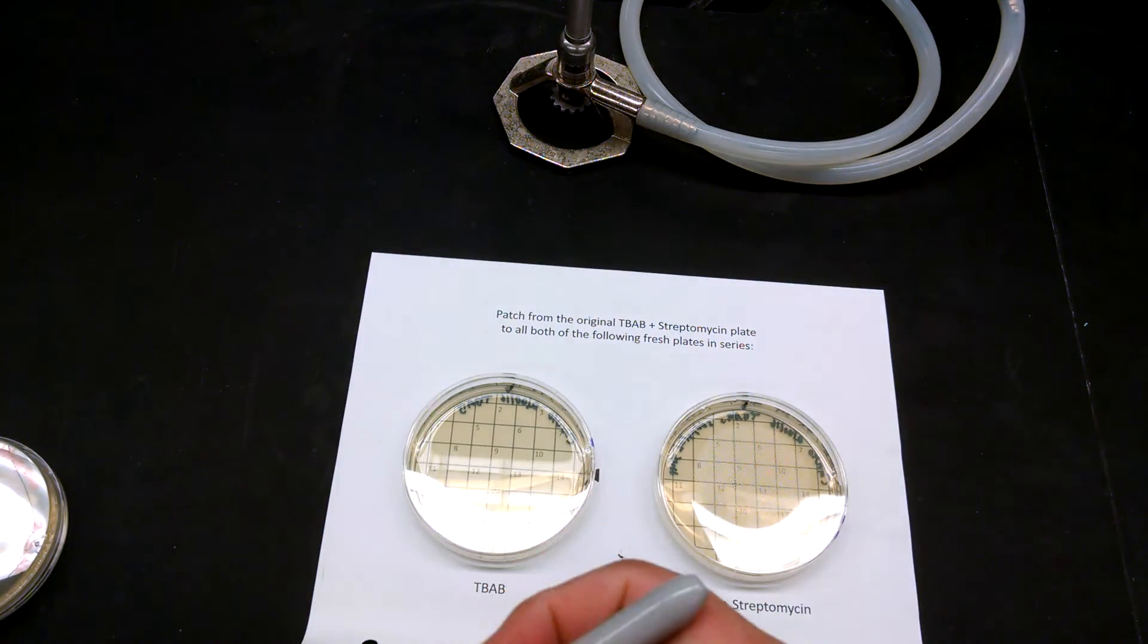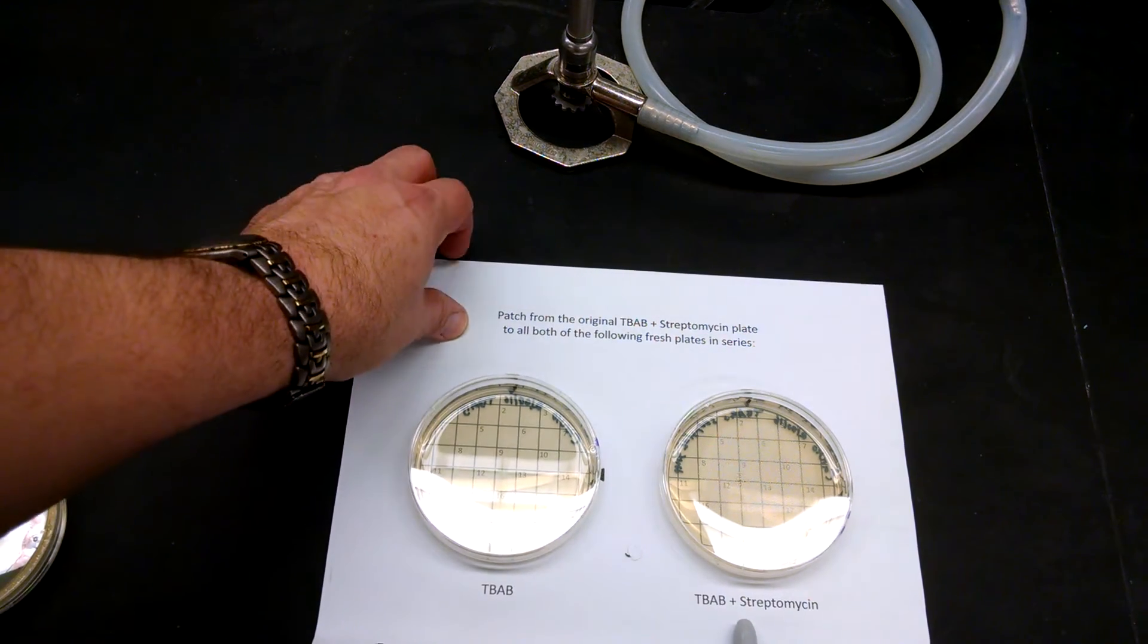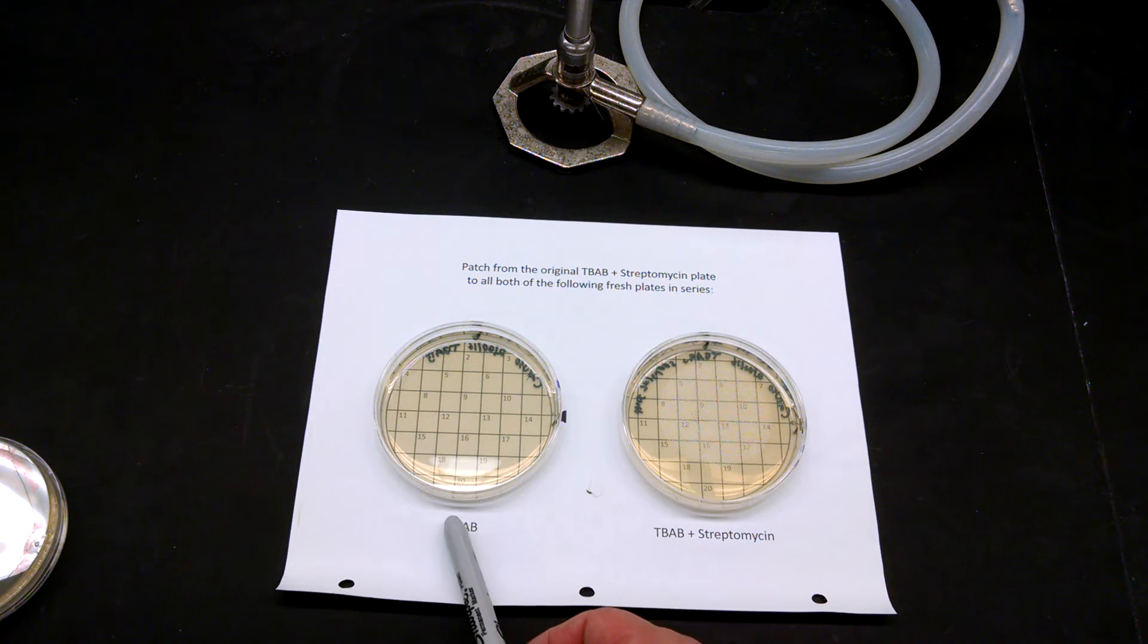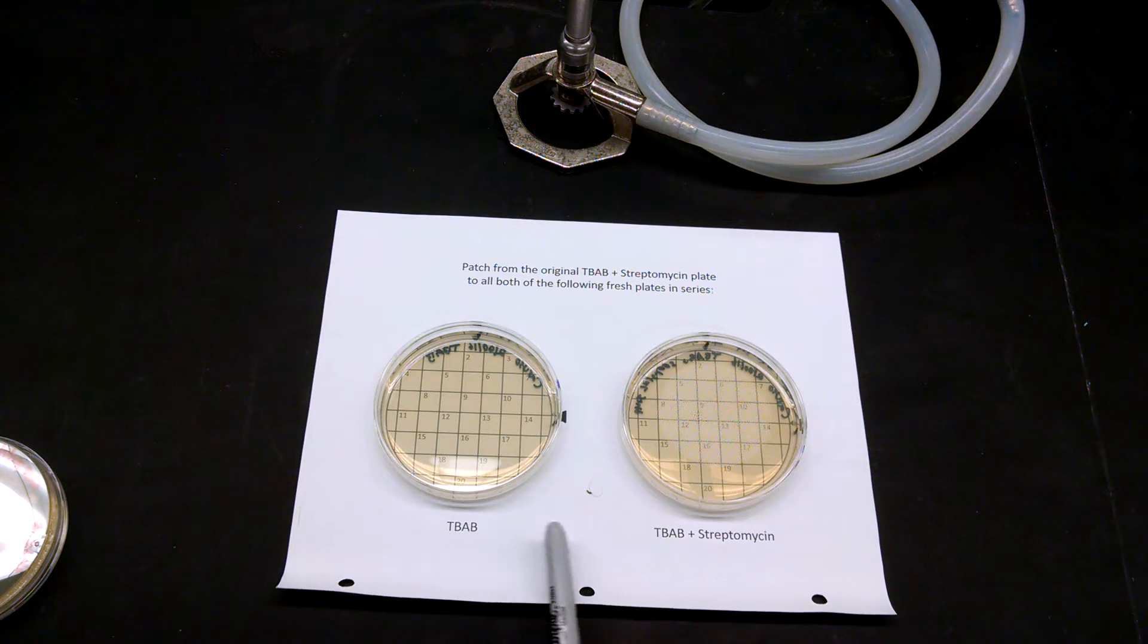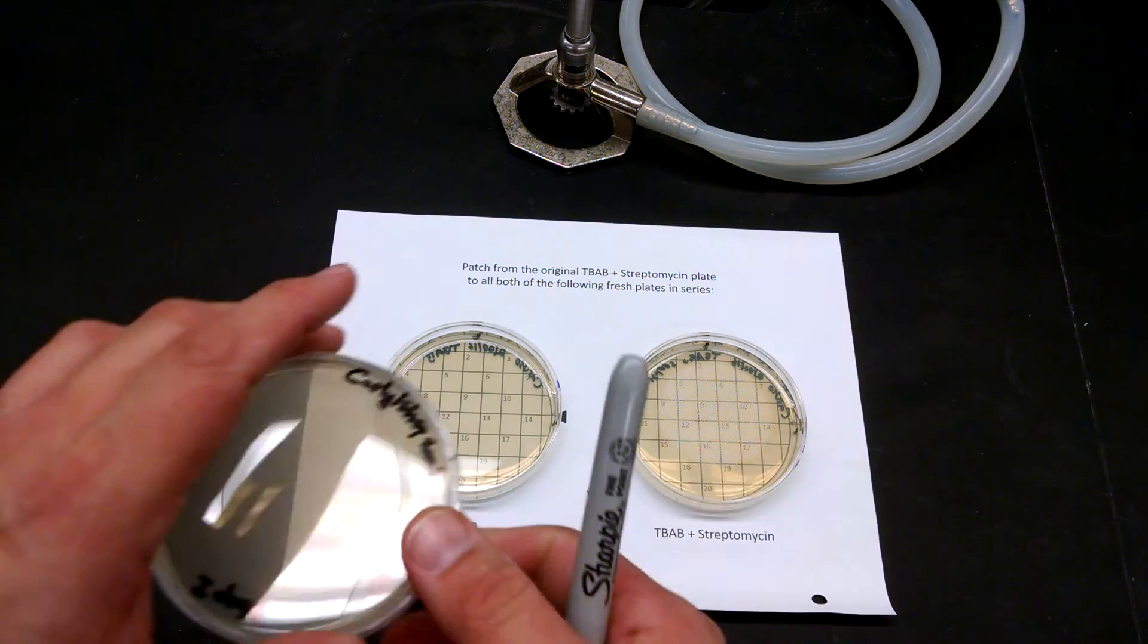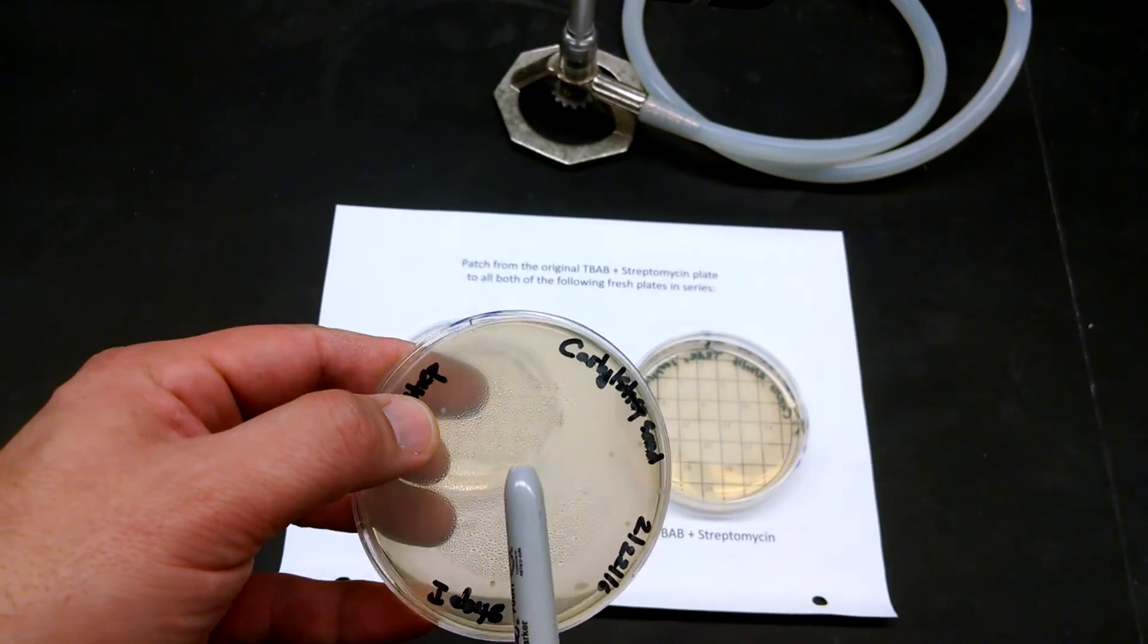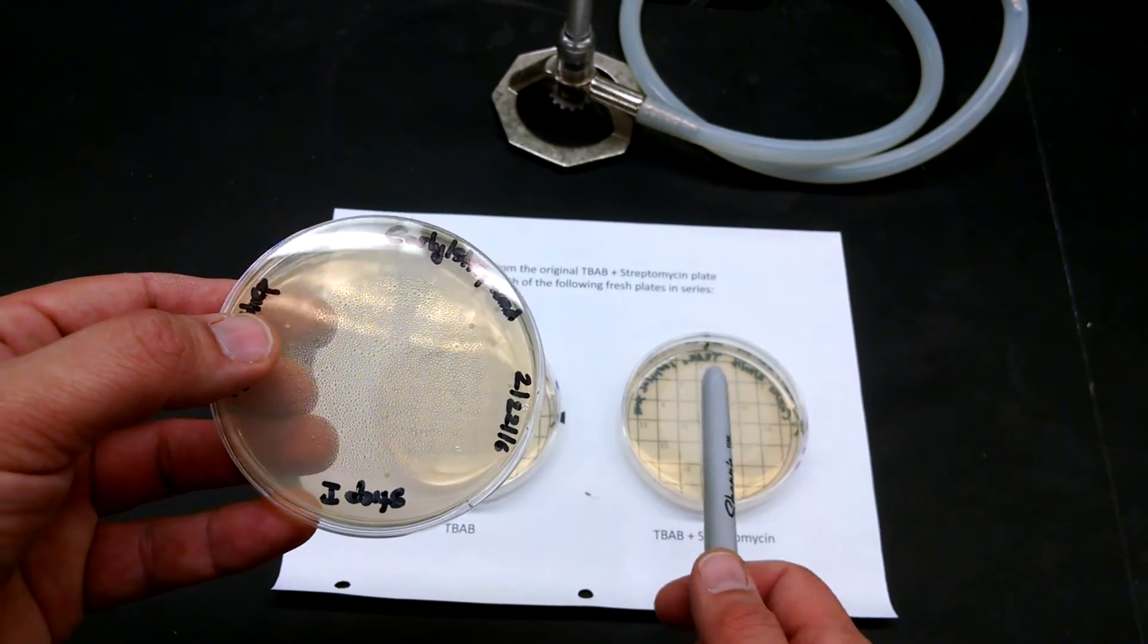And you'll see they line up with those arrows. Now you'll notice that this, if you can read it, says TBAB and this says TBAB plus streptomycin. The order actually matters. We're going to want to patch onto the new condition first and then patch onto the same condition we're patching from. Because our colonies grew on TBAB plus streptomycin, we already know they can grow on this. So we want to put that on there last as a control.